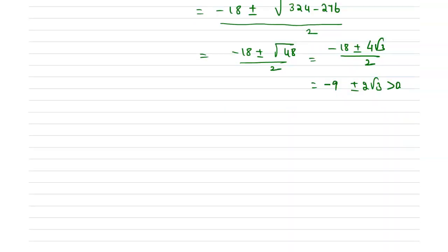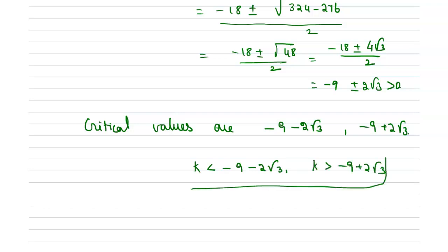Hence from this we can have the critical values are minus 9 minus 2 root 3 and minus 9 plus 2 root 3, and the value of k, that is the range of k, is k less than minus 9 minus 2 root 3 and k greater than minus 9 plus 2 root 3. So this is the range of k.